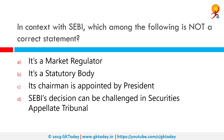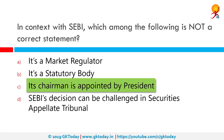In context with SEBI, which among the following is not a correct statement? 'Its chairman is appointed by the president' is not a correct statement. In April 1988, SEBI was constituted as the regulator of capital markets in India under a resolution of the Government of India. SEBI is managed by its members, which consist of the chairman — nominated by the Union Government of India — and two members who are officers from the Union Ministry.